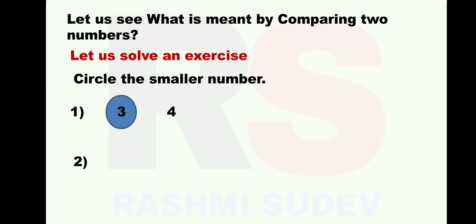Second sum: 1 and 9 are the given numbers. Tell me which is the smaller number. Right answer - 1 is the smaller number.